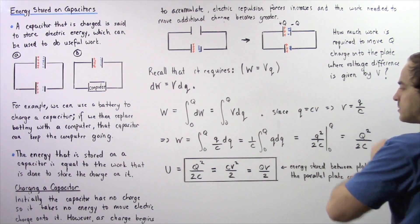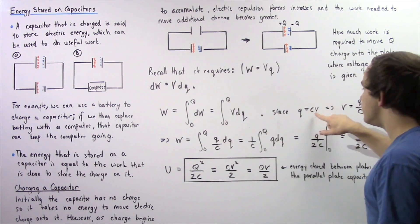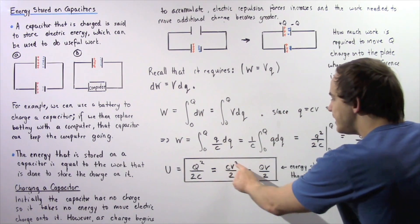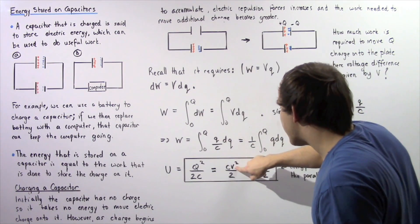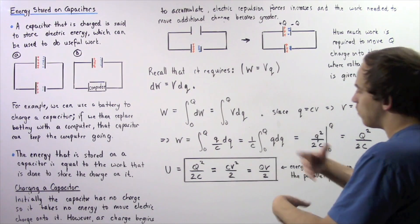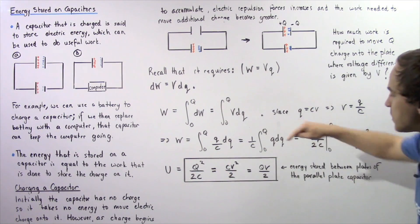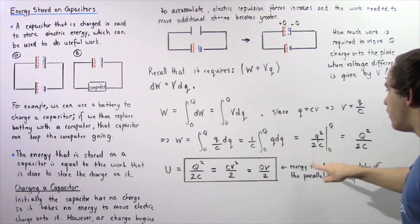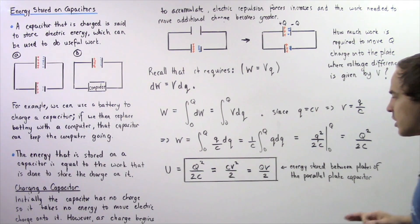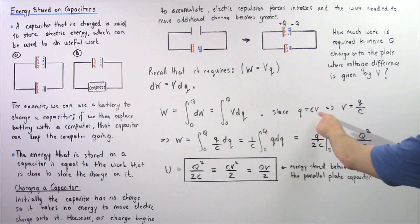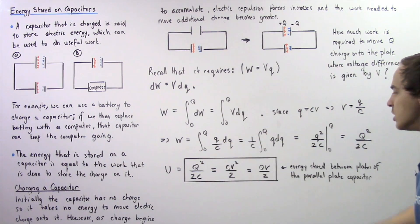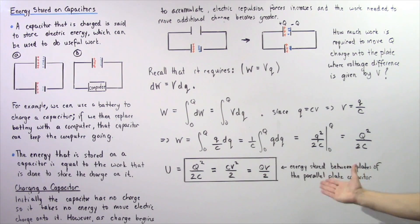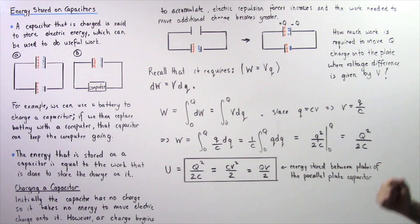Since Q = CV, substituting C·V into Q² gives us that the C's partially cancel, leaving one C on top and V² divided by 2 — so energy also equals ½CV². We can also substitute C = Q/V to get the third form: energy equals Q·V divided by 2. These three equations — Q²/2C, ½CV², and QV/2 — are all equivalent expressions giving us how much energy is stored between the plates of a parallel plate capacitor.